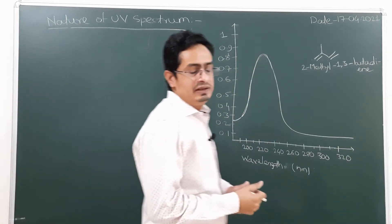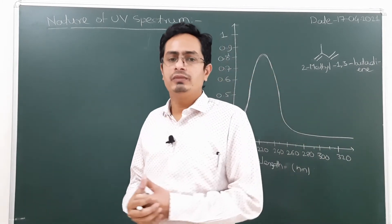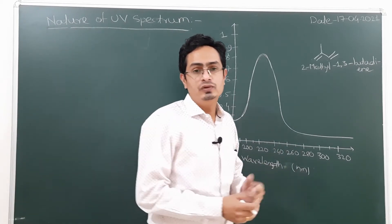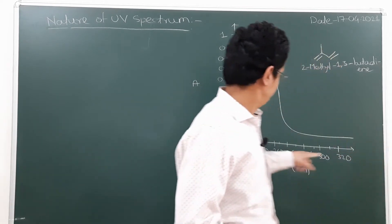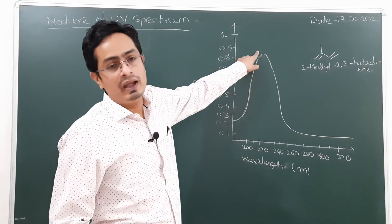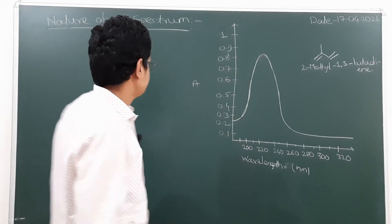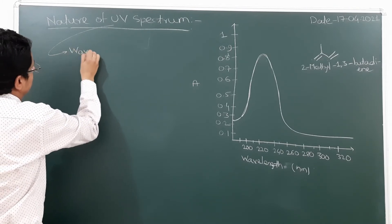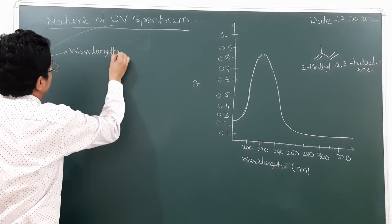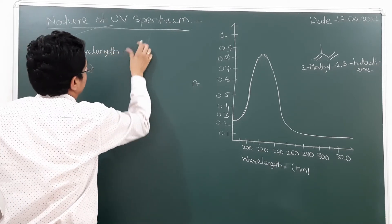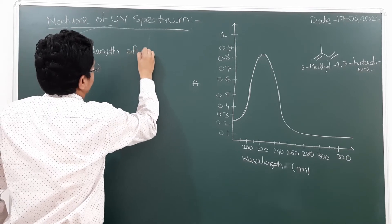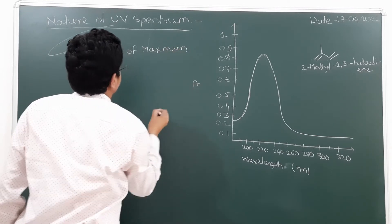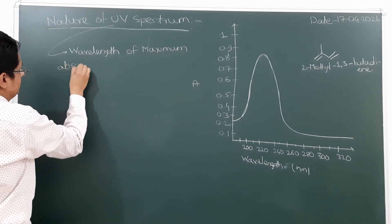The UV spectrum is a curve or graph obtained by plotting absorbance versus wavelength in nanometers. From the UV spectrum we can determine the wavelength of maximum absorption, that is lambda max.